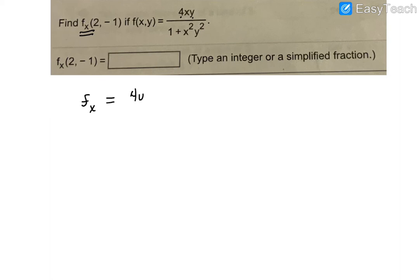So my derivative of the top, I say, is 4y multiplied by the bottom – so 1 plus x²y². And then minus, you take the derivative of the bottom – so the derivative of 1 is 0. Derivative of x² with respect to x would be a 2x. And then you're just bringing the y² along like a constant. And then that's multiplied by the top. And then all of that is divided by the bottom squared.